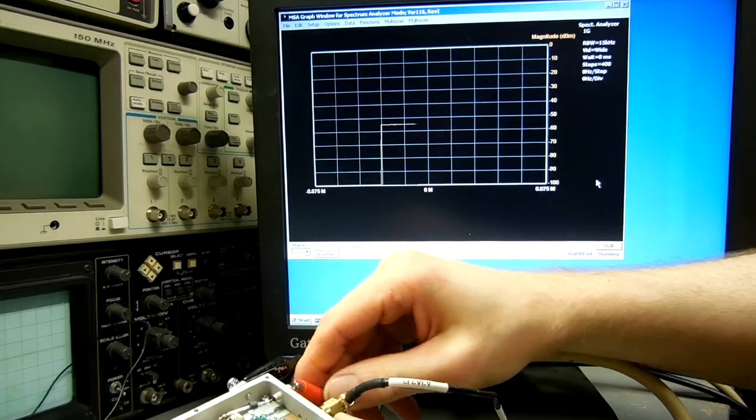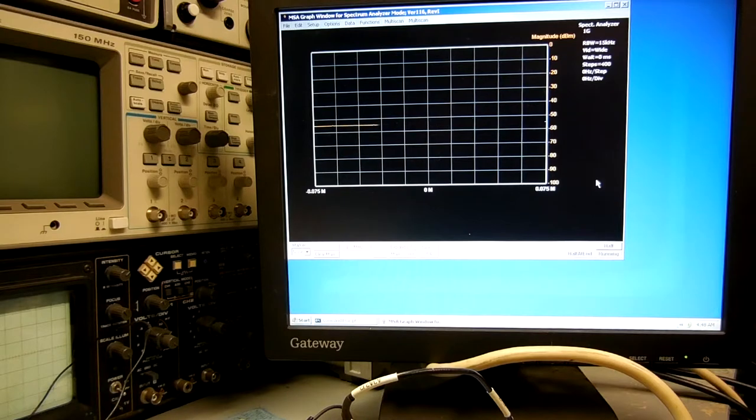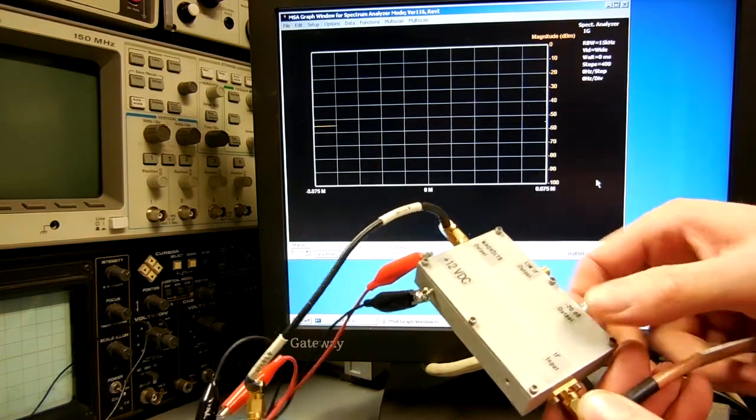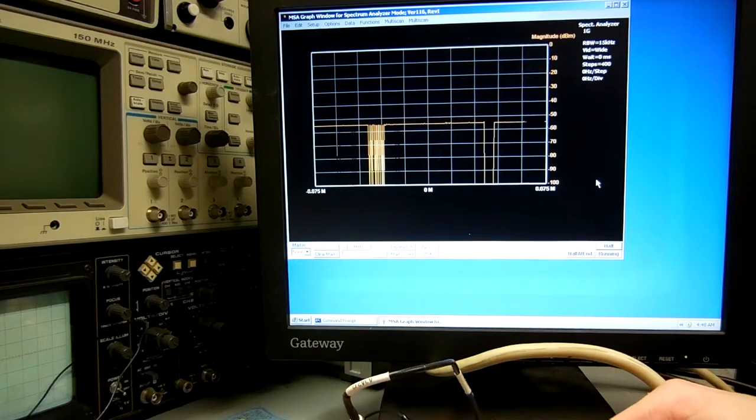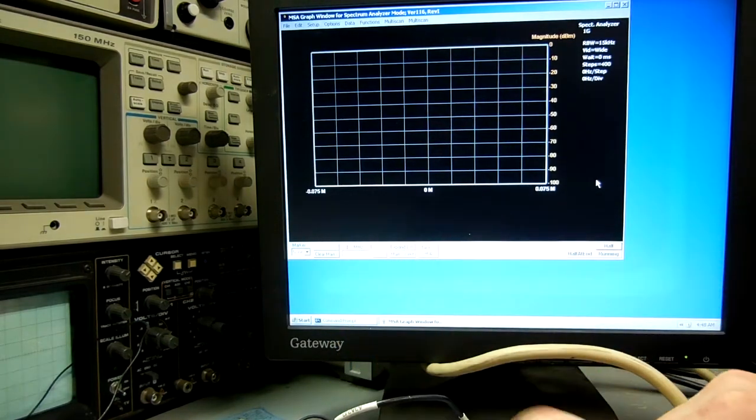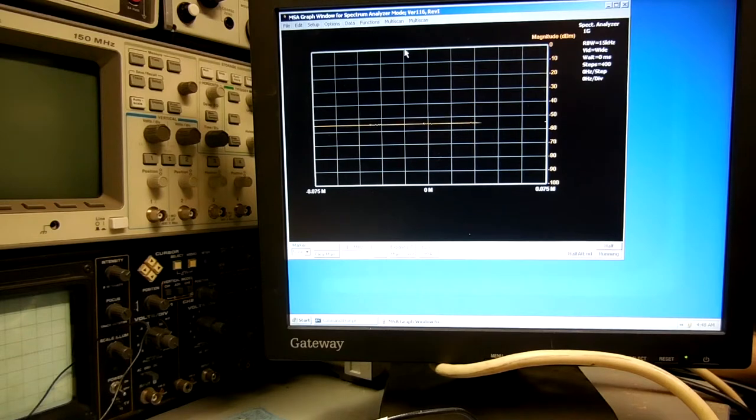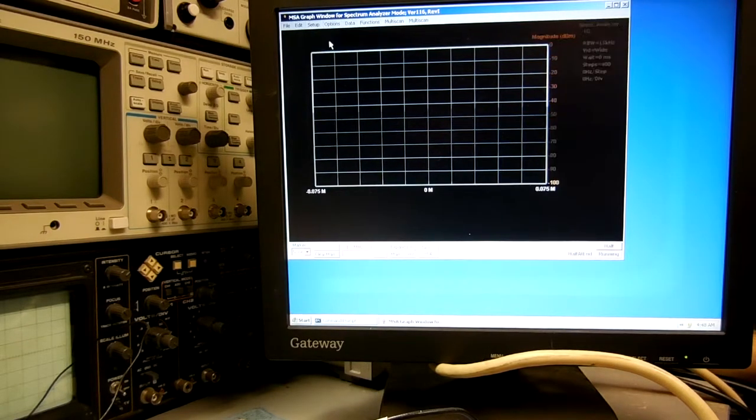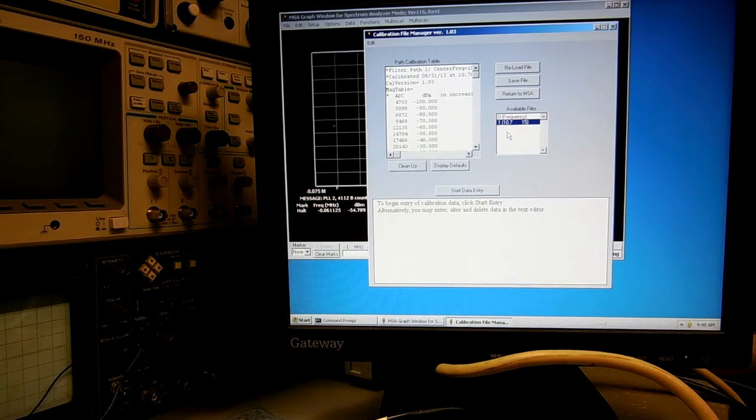On the screen here, I have the software running for the Scotty Spectrum Analyzer project version 1.1.6. I have a negative 55 dBm signal at 10.7 MHz feeding the logarithmic detector into the analog to digital converter. I'm using this for testing right now. You do have to calibrate the software to your analog to digital converter. That's done via the initial cal manager in the software. I'm using 10.7 MHz as our calibration frequency.